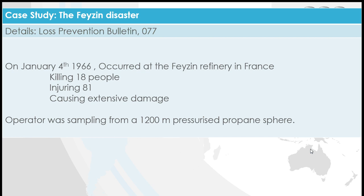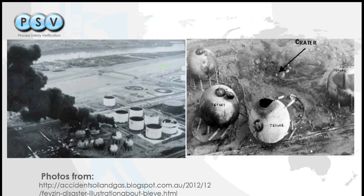The initial incident occurred because three people went out to do some sampling from a pressurized propane sphere. Unfortunately the operator was burned and therefore unable to seal up the sampling line, and this leaked and continued to leak, which led to a fire. There was the initial fire on sphere 443. This sphere BLEVEd — exploded — and then this had a domino effect: once that sphere exploded it led to significant amounts of destruction and other tanks exploding.